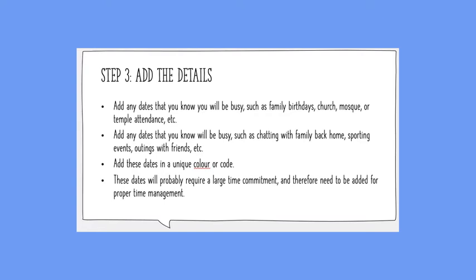Add any dates you know you'll be busy, such as family birthdays, going to church, a mosque, or a temple, dates set aside for chatting with family back home, going to sporting events, or outings with friends. Add these in a unique color or code. Because these dates usually require a larger time commitment, adding them ensures that when you're planning and working on time management, you have enough time to do what you need for school but also enjoy yourself with others.